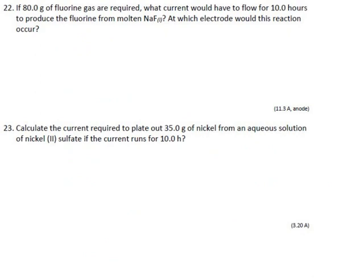80 grams of fluorine are required. We are making 80 grams of F2. What current would have to flow for 10 hours? It's electrolysis. We don't know the current, I is unknown. 10 hours is 36,000 seconds. The Faraday constant is the same thing it was yesterday.